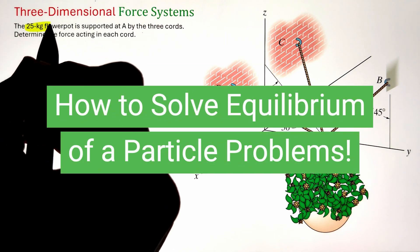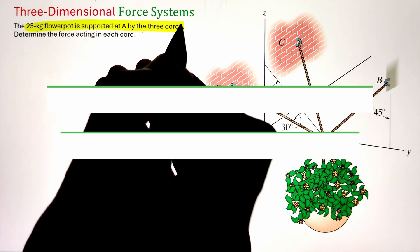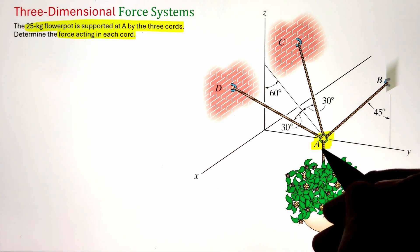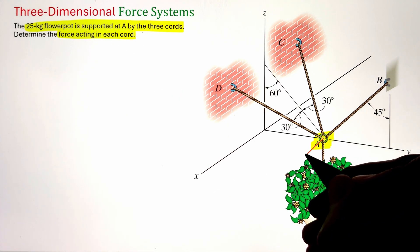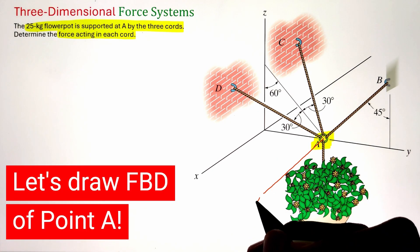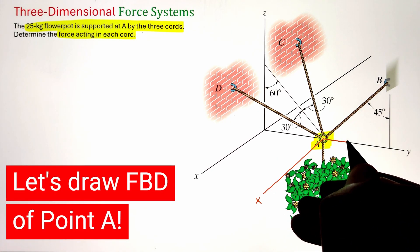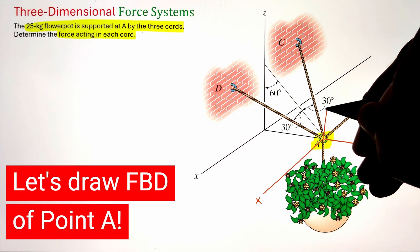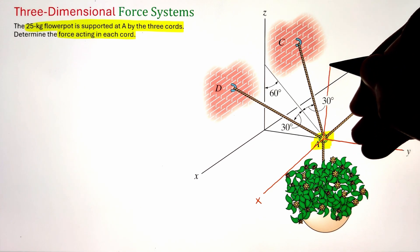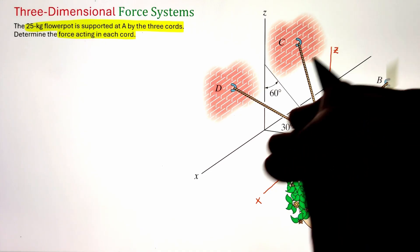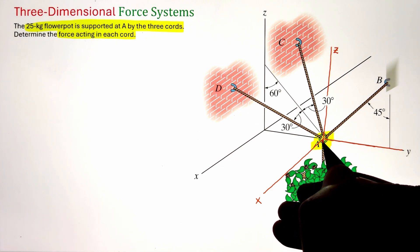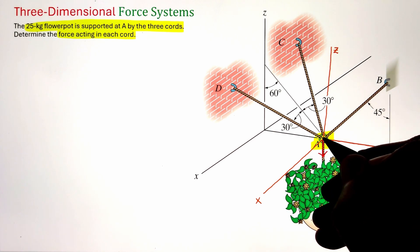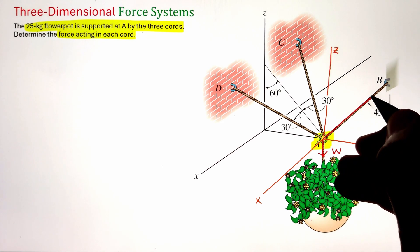In order to figure out the forces developed in the three cords holding a 25 kg flower pot at point A in an equilibrium position, we can start by drawing a free body diagram of point A and list down all the forces developed in the ropes, then apply the equilibrium condition to solve for the unknown forces. To start, let's draw our free body diagram by placing the origin at point A.